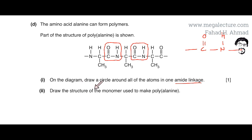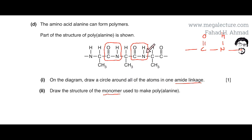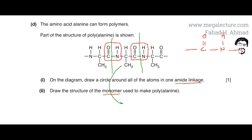The next part asks us to draw the structure of the monomer used to make polyalanine. To find the monomer, we break the amide links — in a polyamide, the amide links are the bonds connecting all the monomers together. Breaking both amide links on either side of the middle unit isolates one monomer, and we redraw that middle piece.